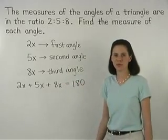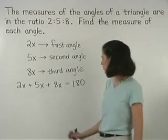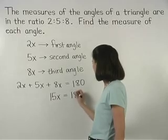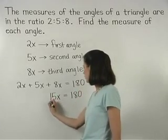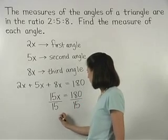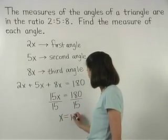And simplifying on the left side gives us 15x equals 180, and dividing both sides by 15, we find that x equals 12.